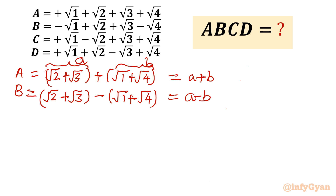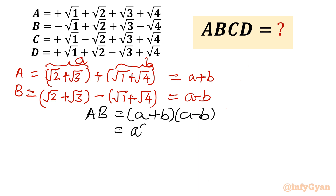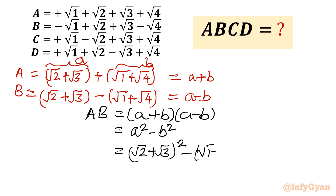If I take the product of A and B, then it would be A plus B times A minus B. I will use difference of two squares: A squared minus B squared. What is A? Root 2 plus root 3, whole square. What is B? Root 1 plus root 4, whole square. Let us expand using the A plus B whole square identity: A squared plus B squared plus 2AB, so 2 plus 3 plus 2 root 6.